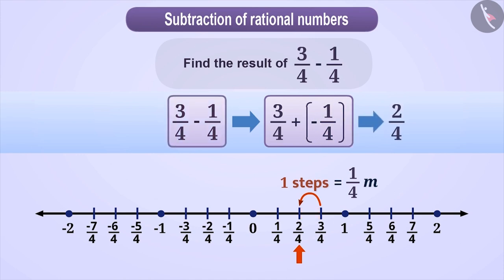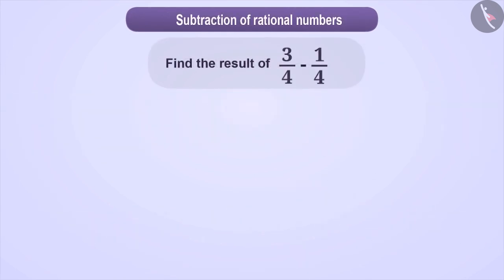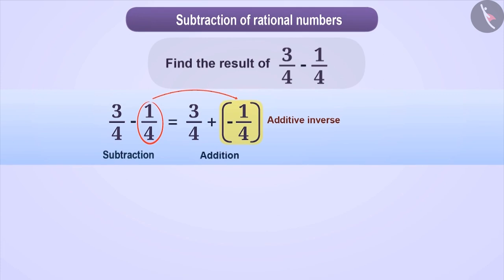The result of the subtraction can be obtained without a number line as well. It is also necessary that we convert the operation of subtraction into the operation of addition. Then we see that the denominators are equal. So we keep the denominator as it is and add the numerators. This way, we get a result 2/4 and simplify it to 1/2.